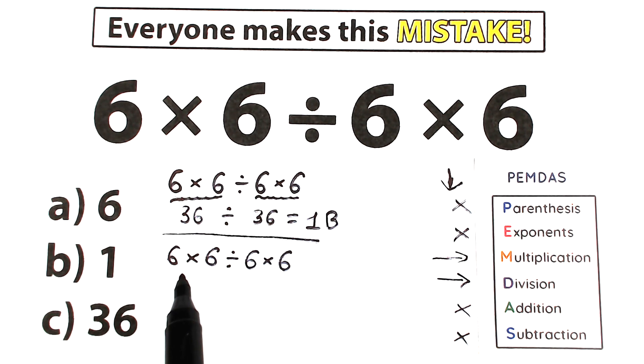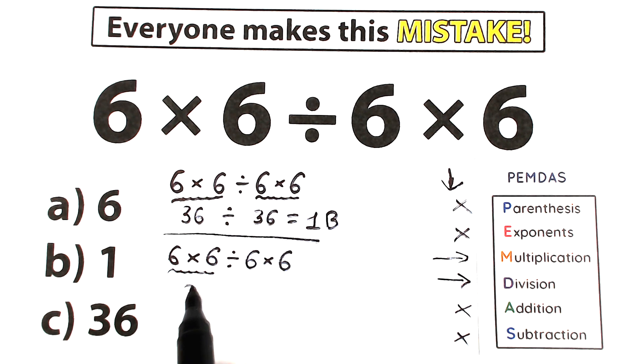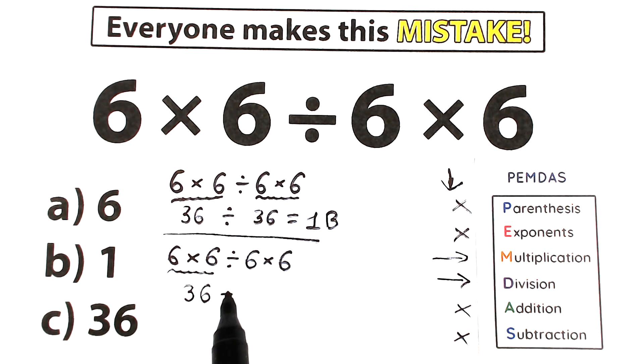So we have three signs, and on the first side, the first sign from left to right is this multiplication. So we should multiply 6 times 6. Completely the same step as right here. So we have 36, divided by 6 and times 6.